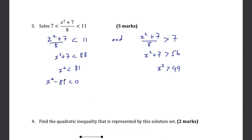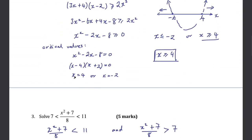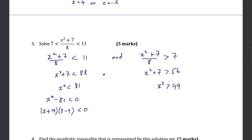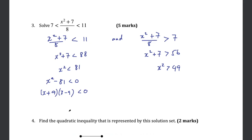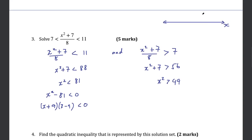For x² < 81, bring 81 to the left: x² - 81 < 0. Using difference of two squares: (x + 9)(x - 9) < 0. Critical values are -9 and 9. It's a positive quadratic, and we want less than 0, so values between -9 and 9. So for this part: -9 < x < 9.